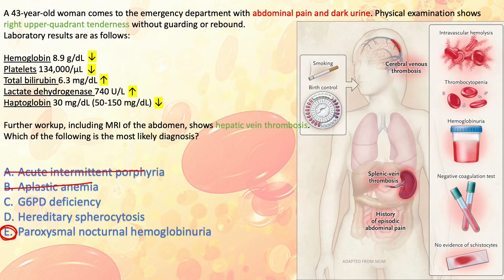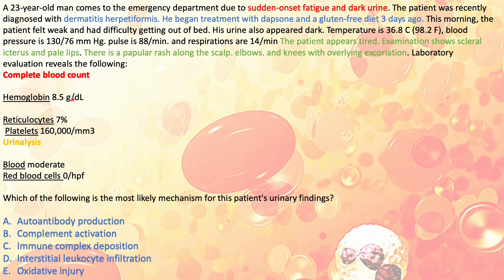For the next question, let's read the labs first. Hemoglobin is low — this is anemia. Reticulocytes are 7%, which is very high because reticulocytes should not exceed 1 to 1.5% of peripheral blood. These are RBC precursors, and having so many means red blood cells are being broken down in the peripheral circulation, so the bone marrow is trying to increase production to compensate.